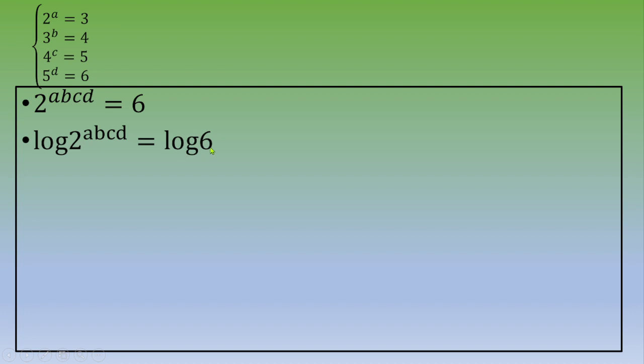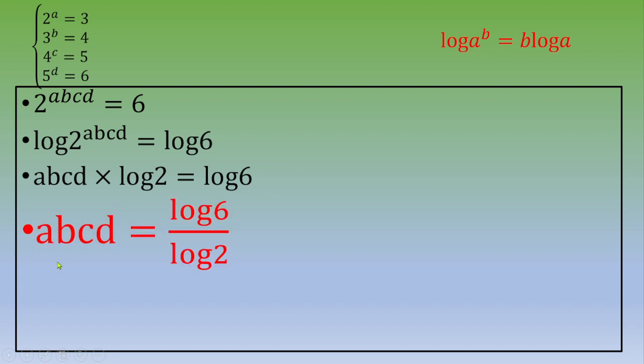Then you apply this rule: log(a^b) = b × log(a). So you get abcd × log(2) = log(6), and at the end, abcd = log(6) / log(2). Thanks for watching this video and